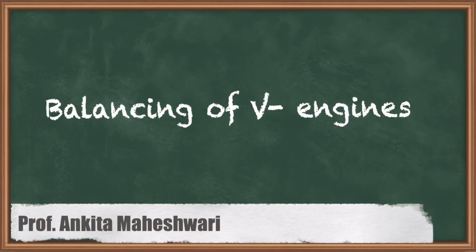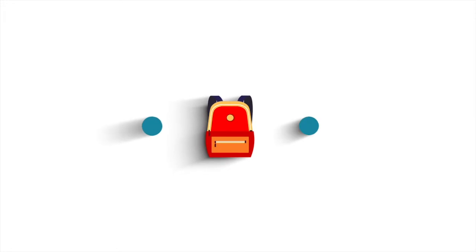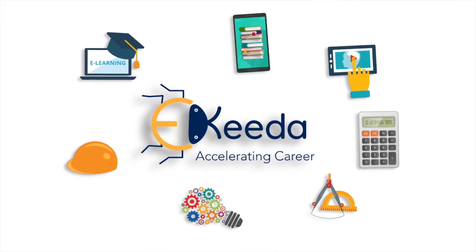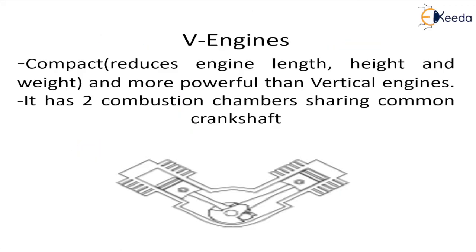Hello everyone. In this video we will discuss balancing of V engines. V engines are the type of engine where two connecting rods run on a common crank, and the cylinders are grouped together at certain angles — usually 45 degrees, 60 degrees, and 90 degrees. This is quite different from inline engines where cylinders are placed in a straight line. By grouping them, we make the system compact, reducing dimensions and weight since one crank is shared by both connecting rods.